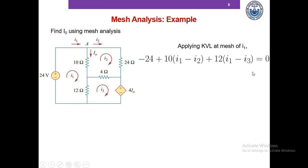An easy way to remember: when a resistor exists in multiple meshes, we first write the current of my mesh minus the current of the other mesh. The current I1 comes first in this equation because we're writing KVL for mesh I1.